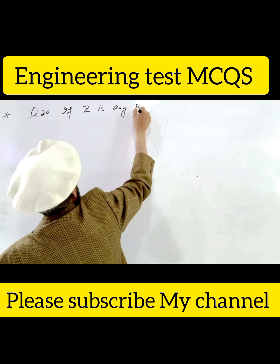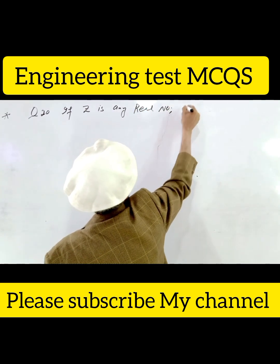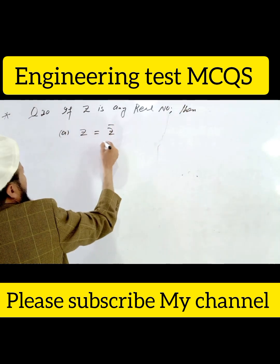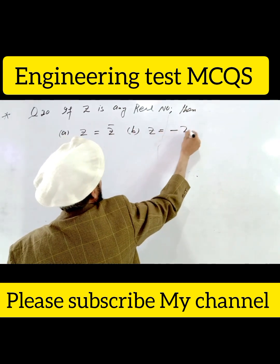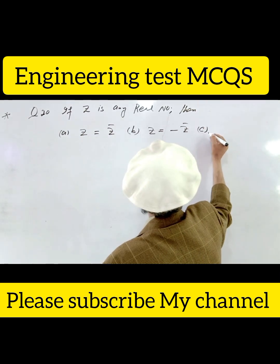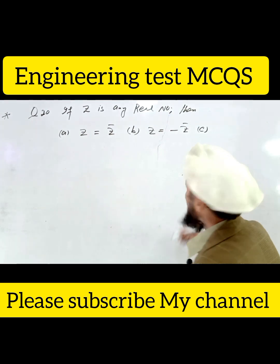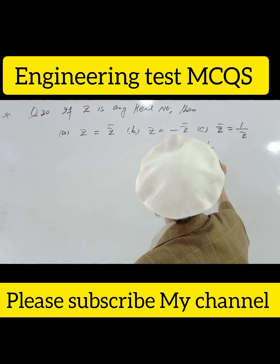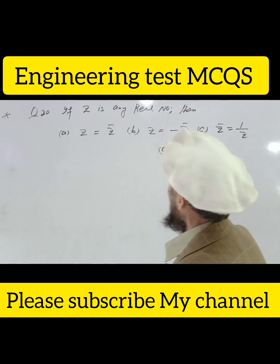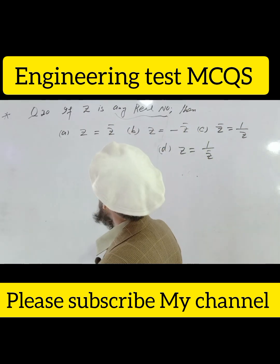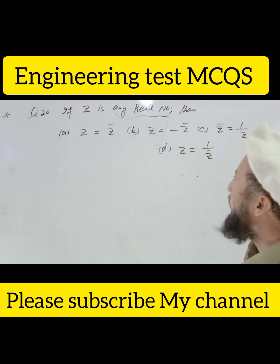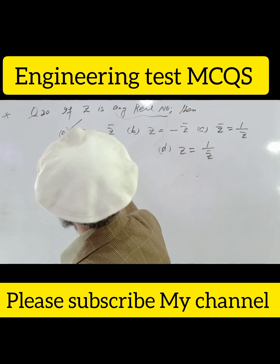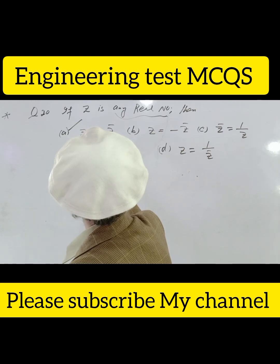Question 20: If z is any real number, which property holds? A) z equals z-bar, B) z equals minus z-bar, C) z equals z with imaginary part 1, D) z equals 1 over z-bar. The correct answer is A. If z is any real number, the imaginary part is 0.